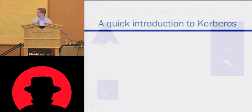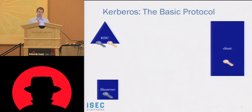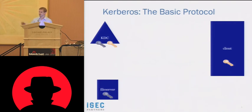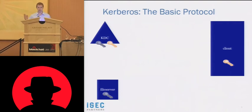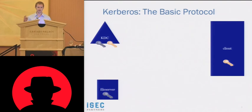A very brief introduction to Kerberos: Kerberos is a trusted third party symmetric key exchange protocol based on the Needham-Schroeder protocol from 1978, then formalized over several versions into the current form of Kerberos 5 today. The basics are still the same. You have a trusted third party, the KDC — the key distribution center — and it has a shared secret with everyone else that participates in Kerberos. That set of principals for which the KDC has shared keys is called the realm.